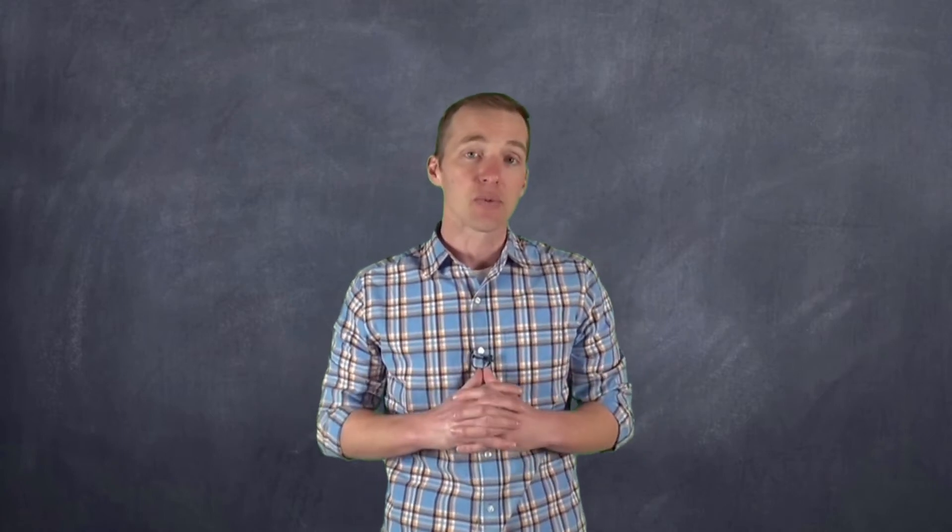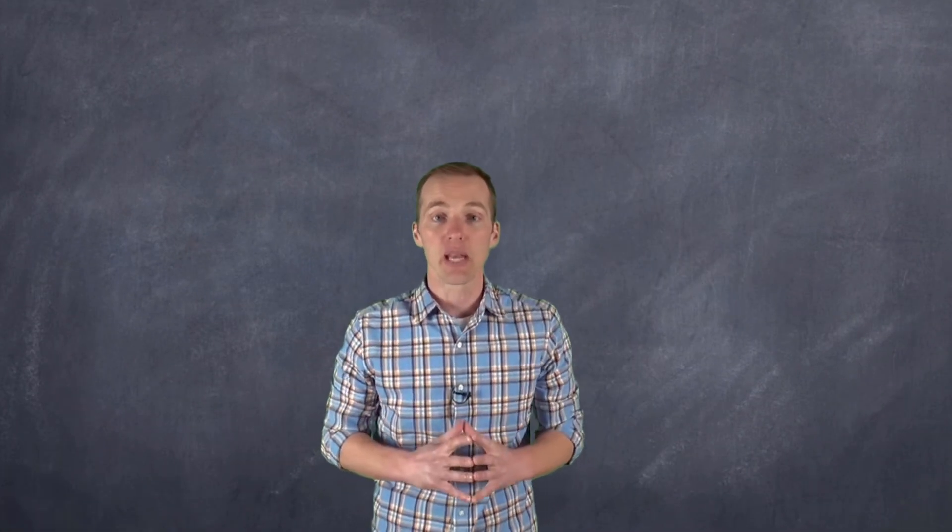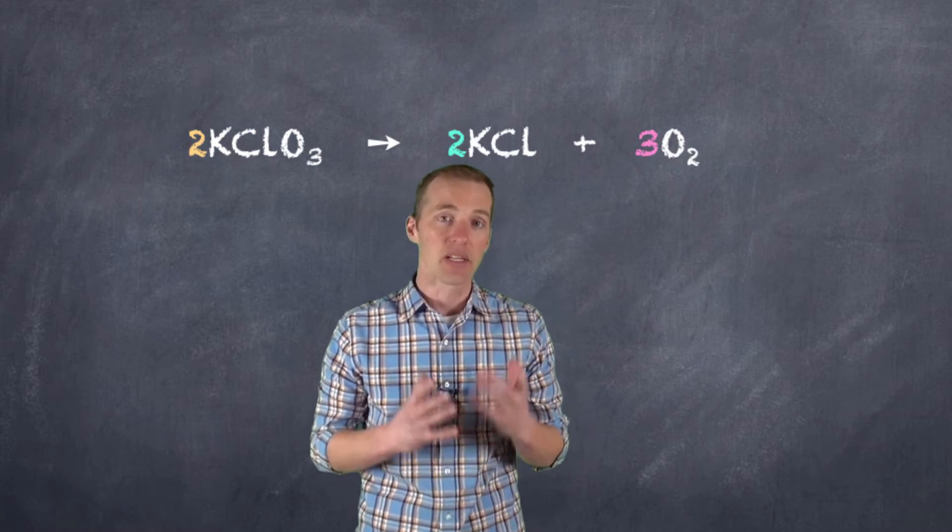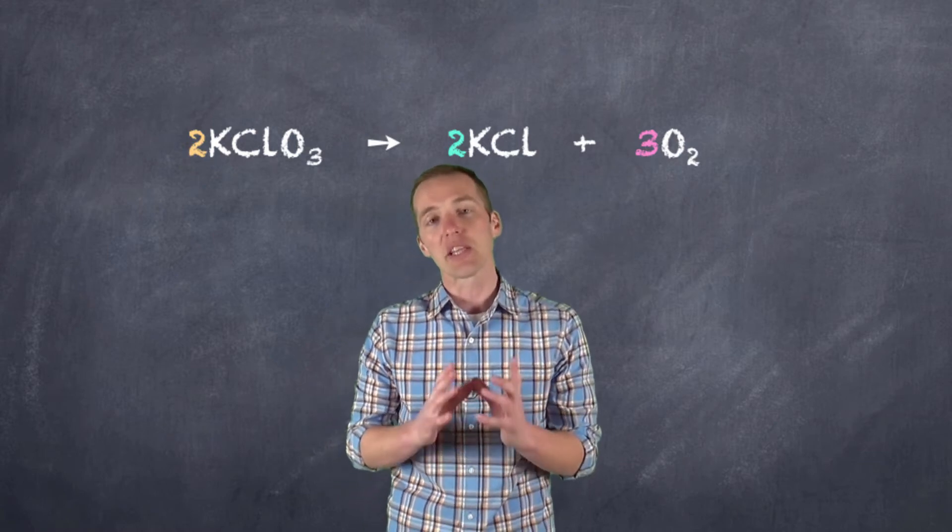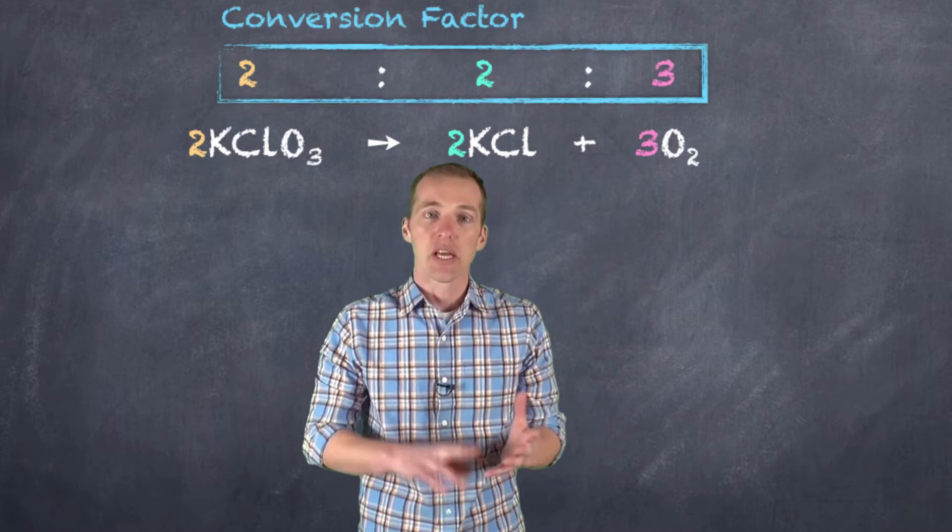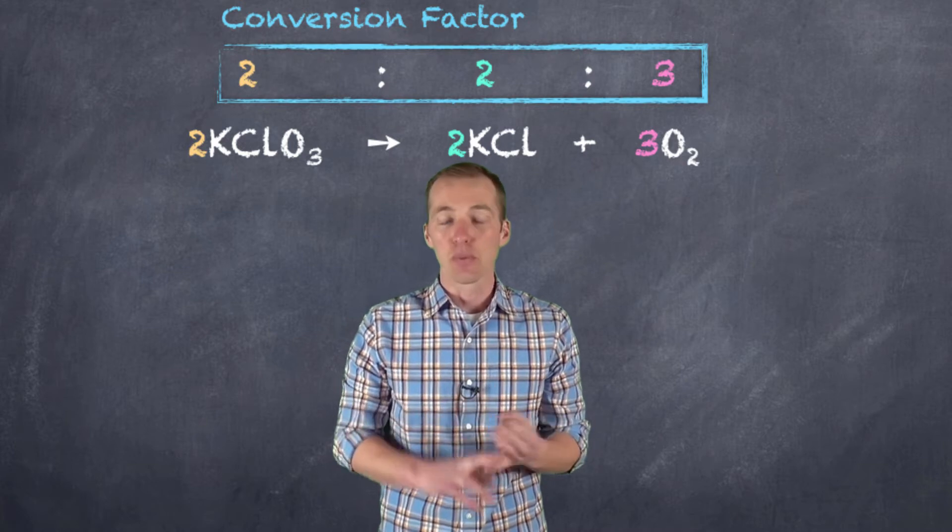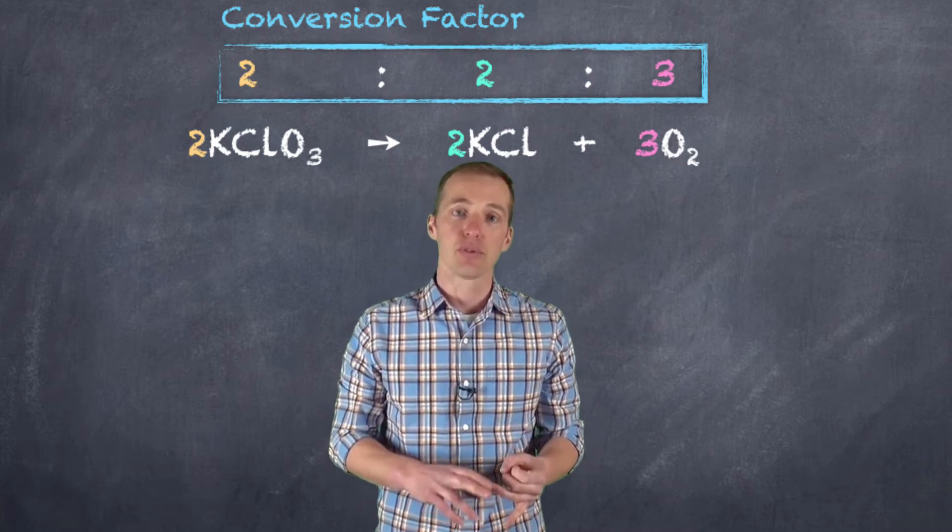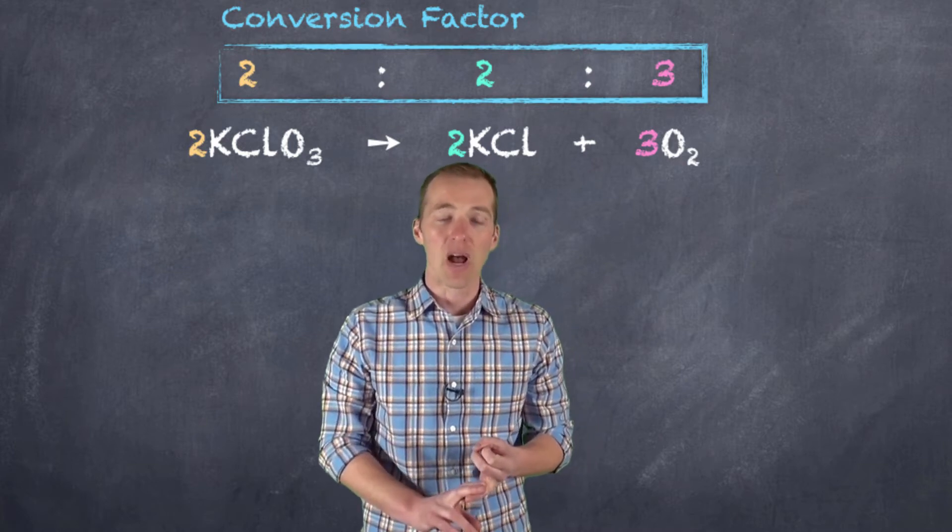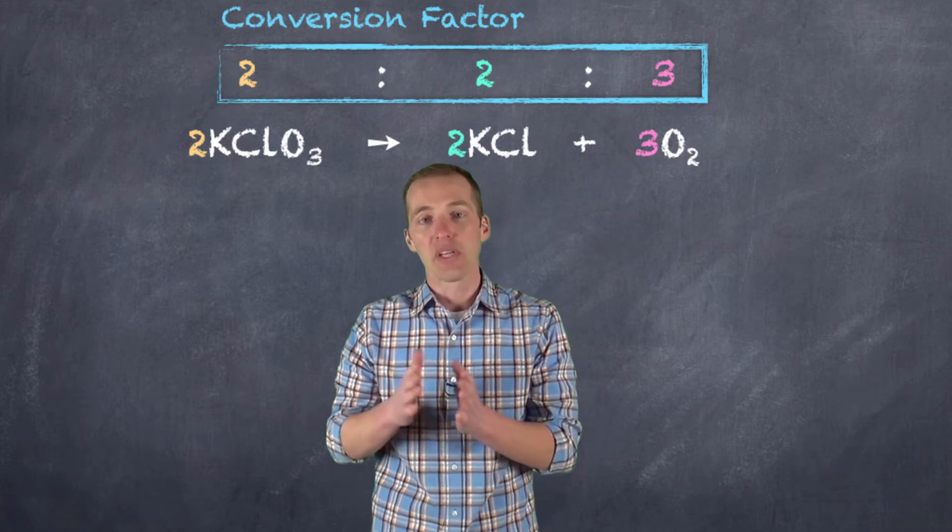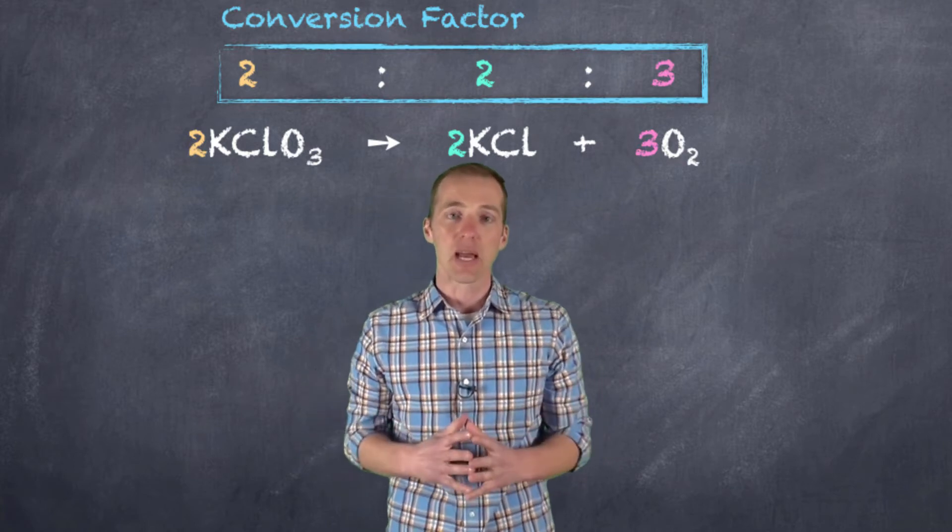But in order to do this, we have to have the balanced chemical equation first. So let's take a look at an example. So here we have the decomposition of potassium chlorate into potassium chloride and oxygen. And we can see that the mole ratio of the coefficients is two to two to three. Now, the way we can communicate this is two moles of potassium chlorate decompose to form two moles of potassium chloride and three moles of oxygen gas. And this ratio is going to be maintained for this particular chemical reaction.